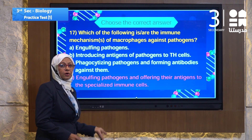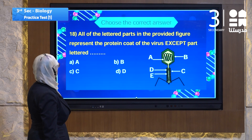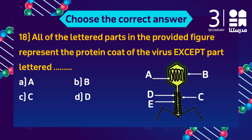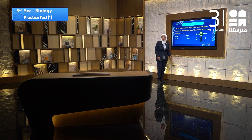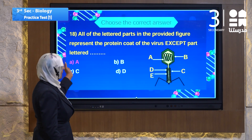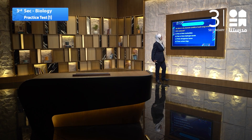Question 18: All labeled parts in the provided figure represent the protein coat of a virus except one letter. There are protein substances except one — which is not protein, it must be DNA. The DNA structure must be letter A. The answer is A — the DNA structure inside the virus particle.